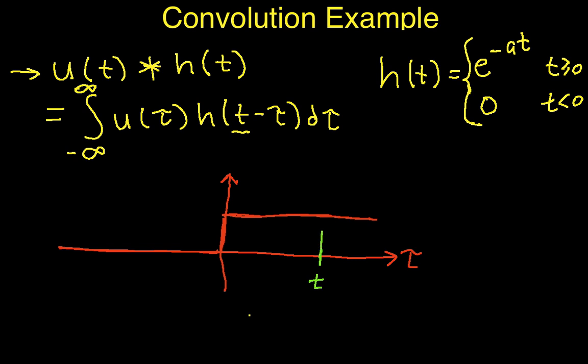It's basically, well, here before we draw this, let's actually just show what happens when you get, or to get h of t minus tau. So we start off with h of t that looks like this.